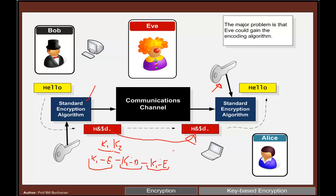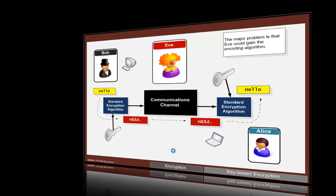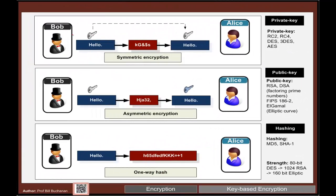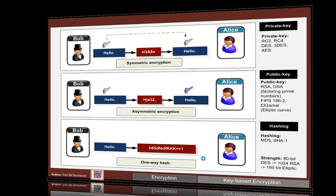On the other side we do the reverse. There are three main methods of encryption: symmetric, which is secret key or private key — of which 3DES is one — we can also have public key asymmetric encryption, and one-way hashing.